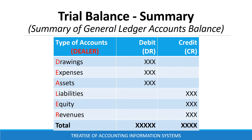This is a summary of how a trial balance looks like. The acronym DILA shows the expected general ledger account balances. Drawings, expenses, and assets are expected to have debit balances, while liabilities, equity, and revenues are expected to have credit balances.